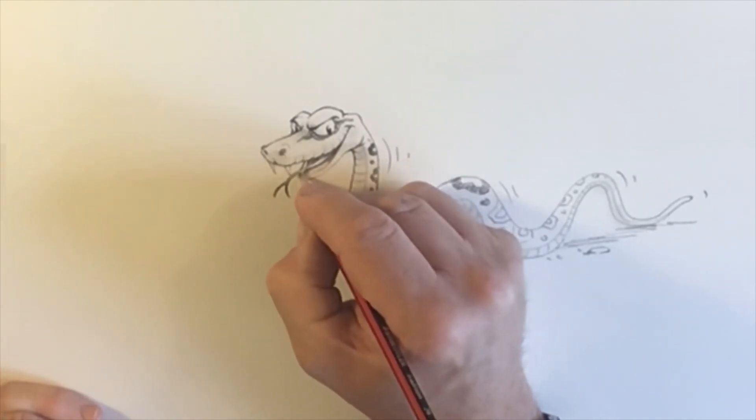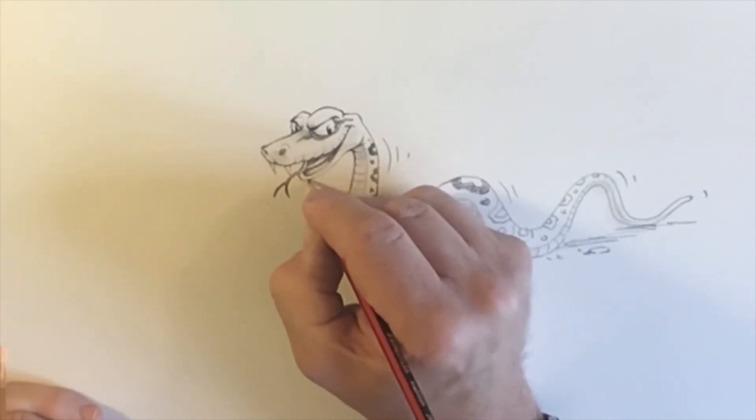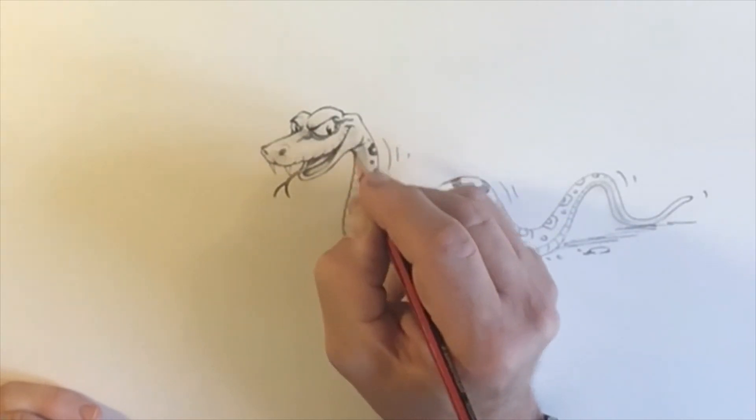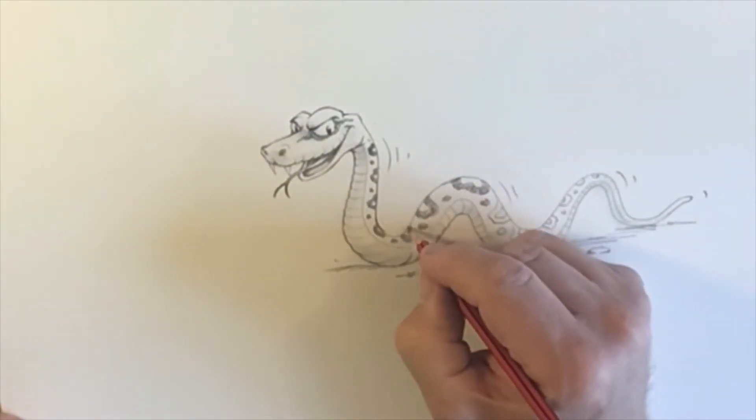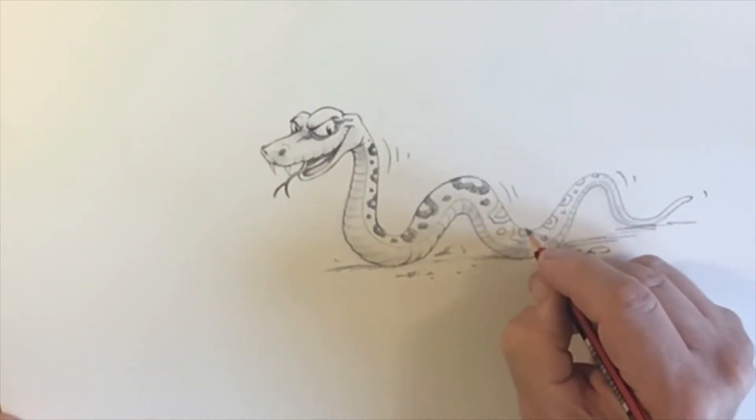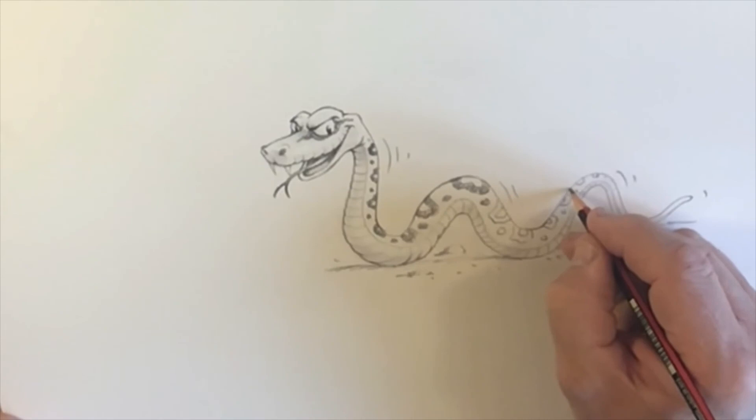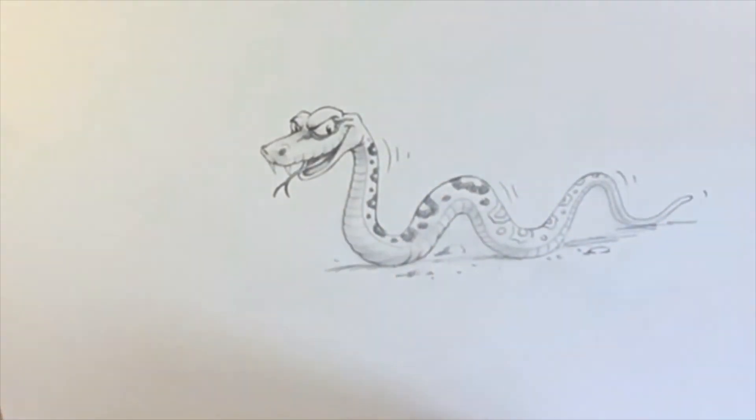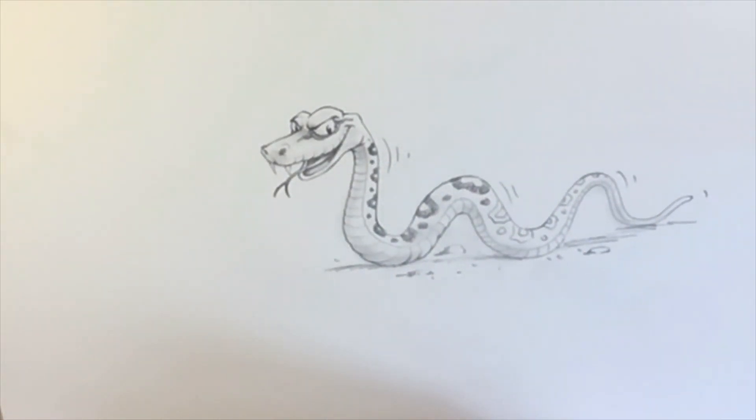That's better, isn't it? Oh, yes. And there we have our snake in the grass. Except I haven't drawn the grass, I've just drawn some rocks. Anyway, that's my snake.